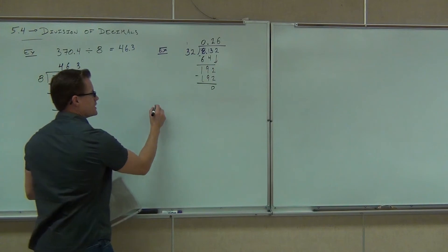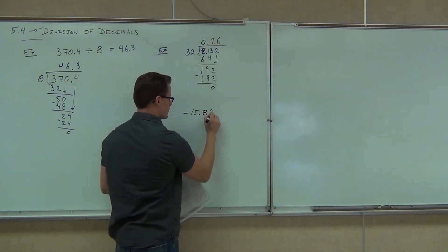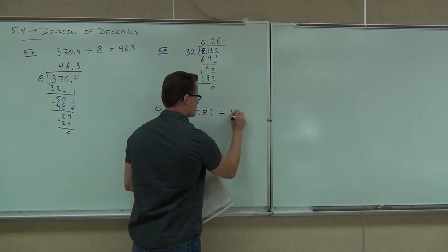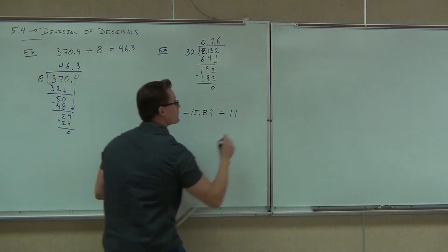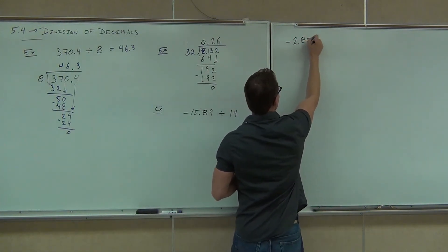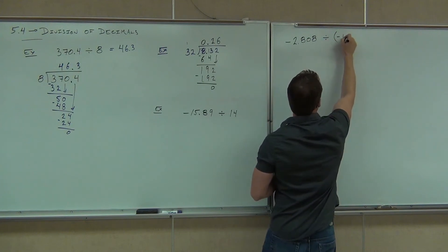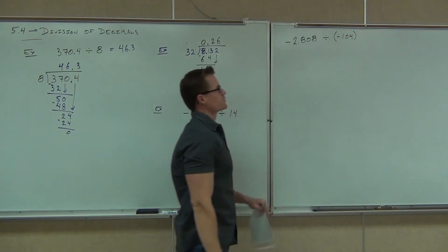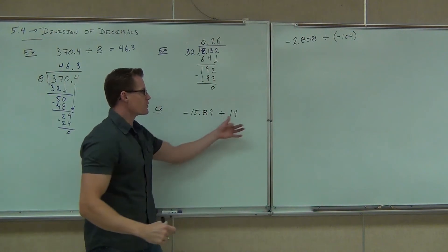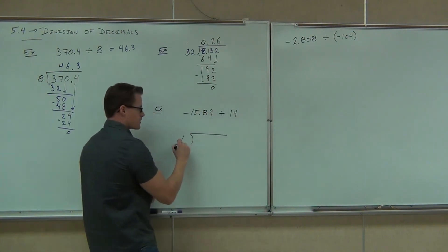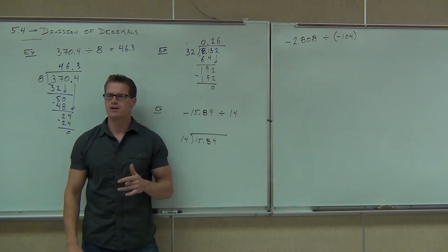By the way, does it still work if I have negative numbers? Yes. Why don't you try a couple of these on your own? You know what? Actually, let's do them together just to make sure we get this down. First thing, when we're setting up division, even though this one's smaller and positive, we're going to put this on the outside of our division symbol, and inside we put our 15.89. Real quick question. Is our answer going to be positive or negative? Negative. Why negative?